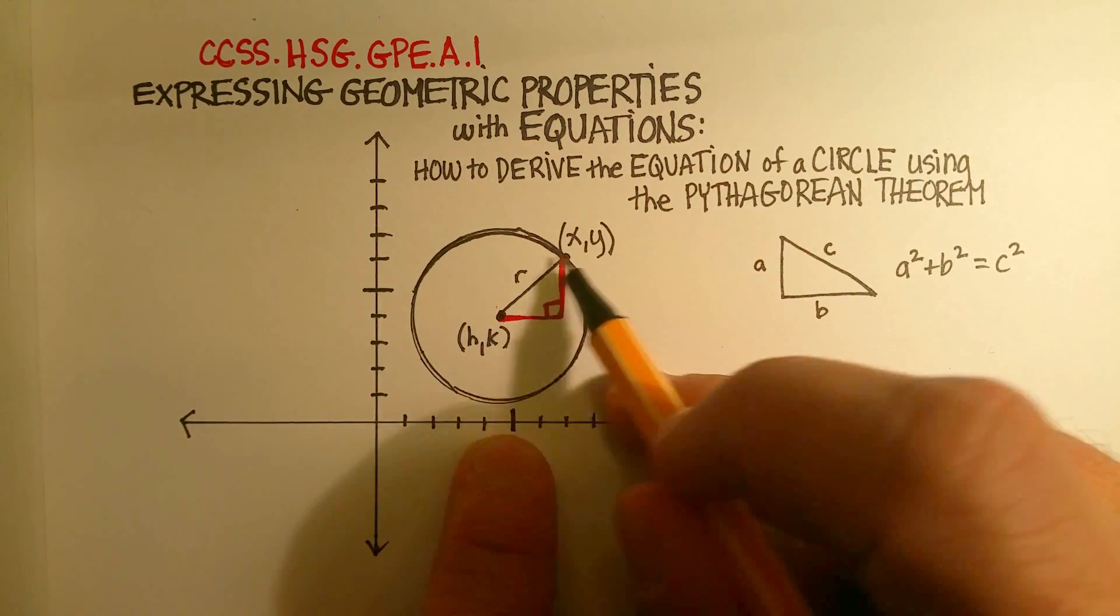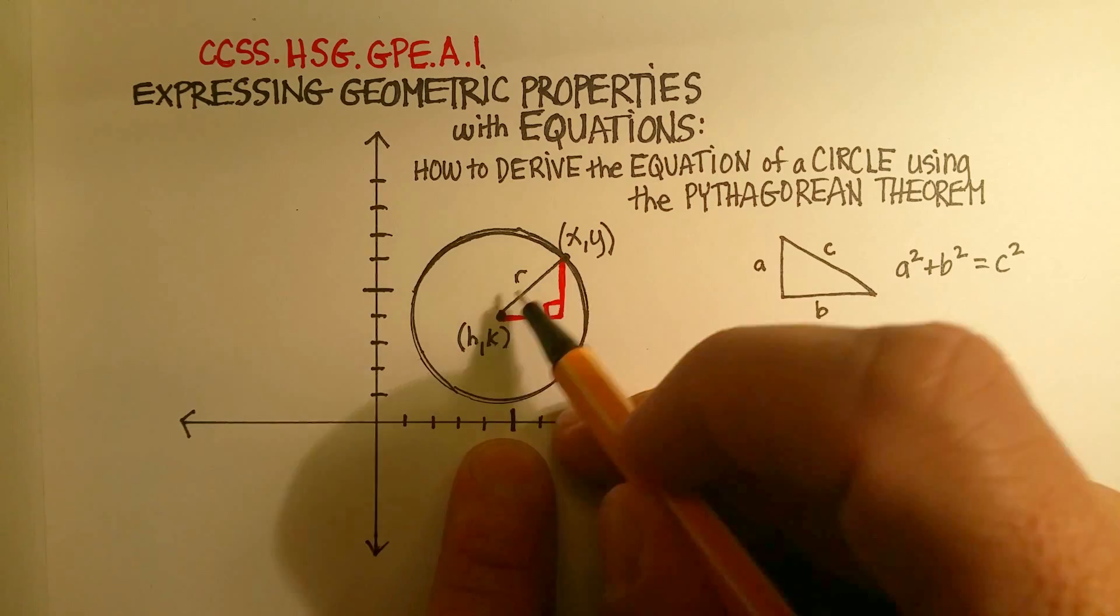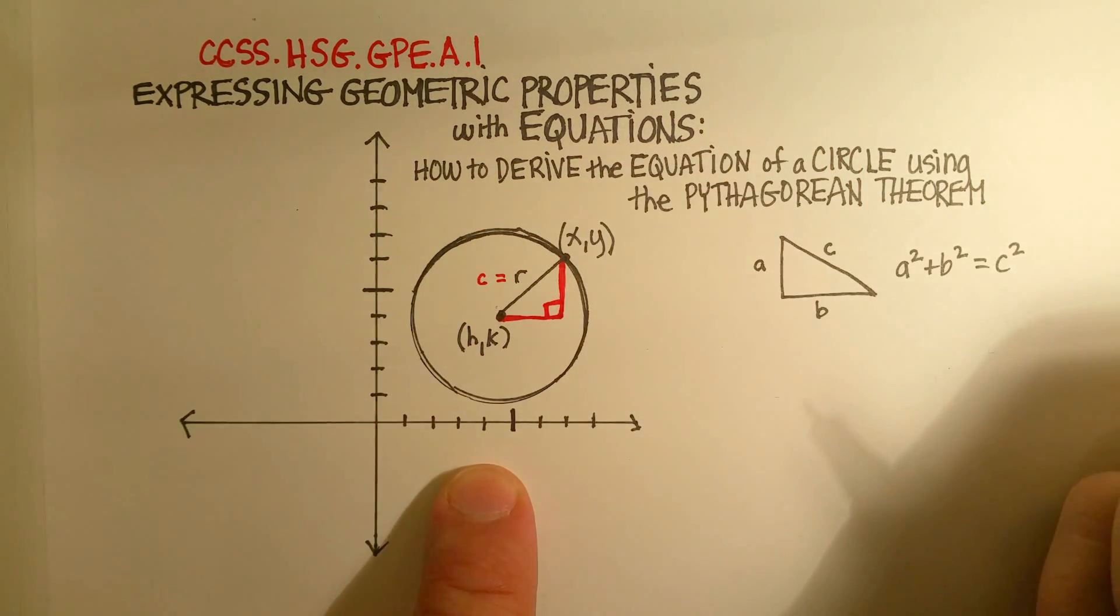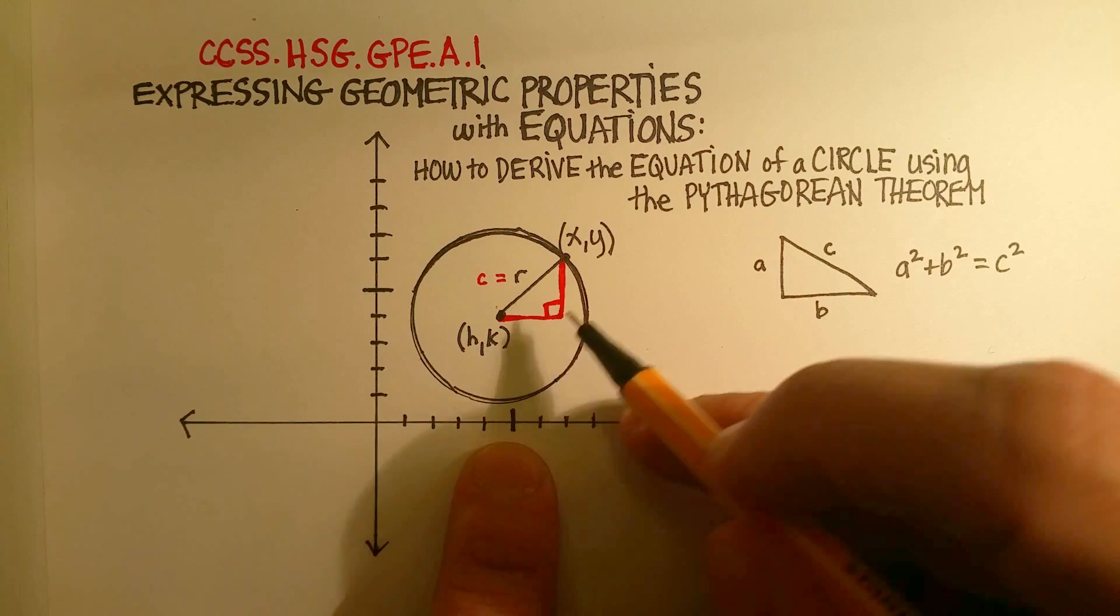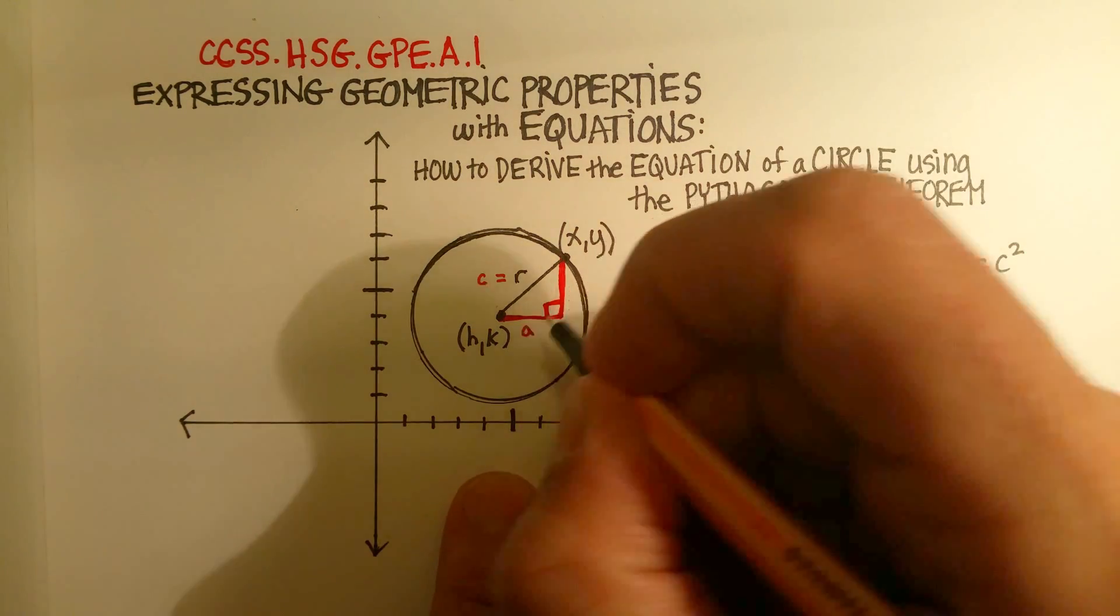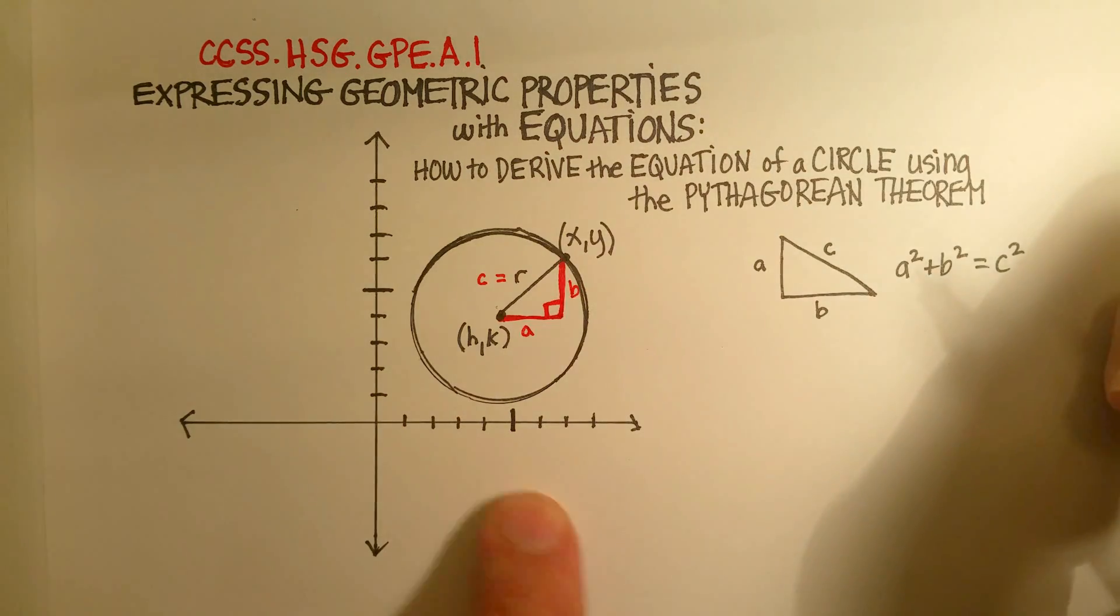Since this is our right triangle, our r has become our c, because that's the hypotenuse. We can make either one of these two sides the a and the b. So we'll call this side a and this side b.